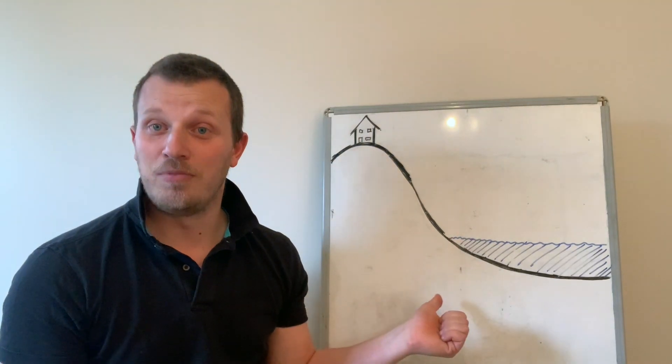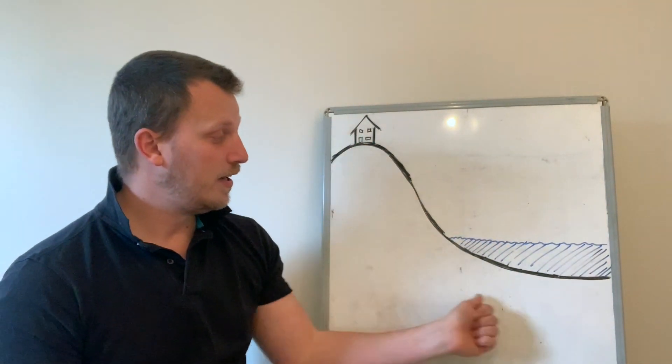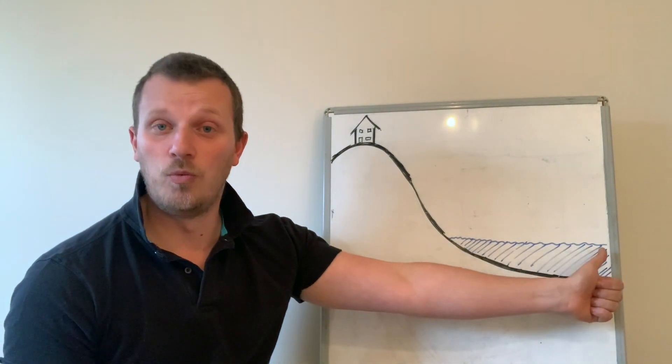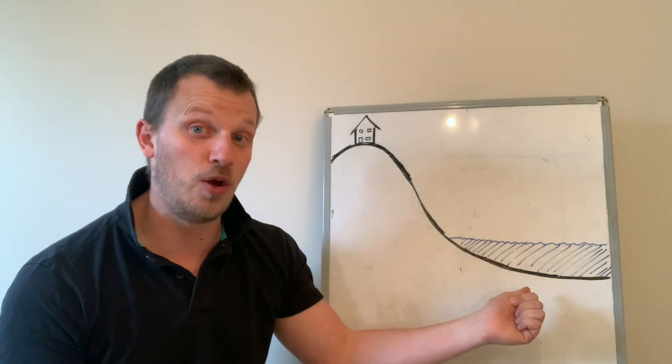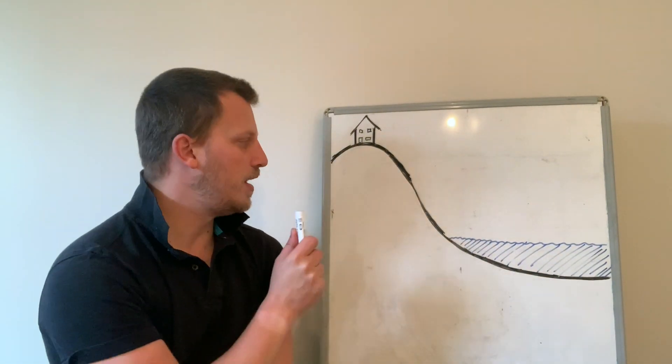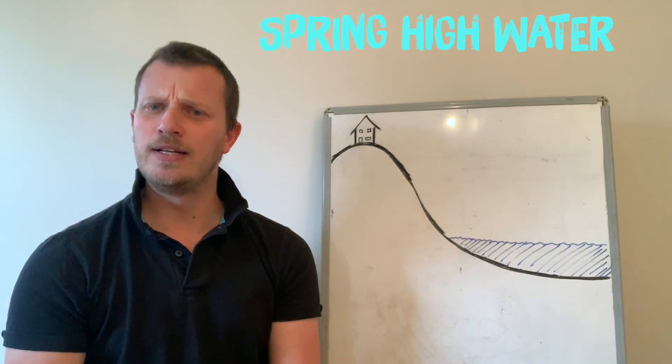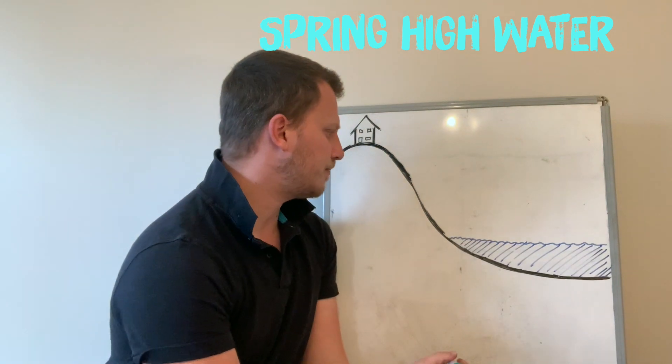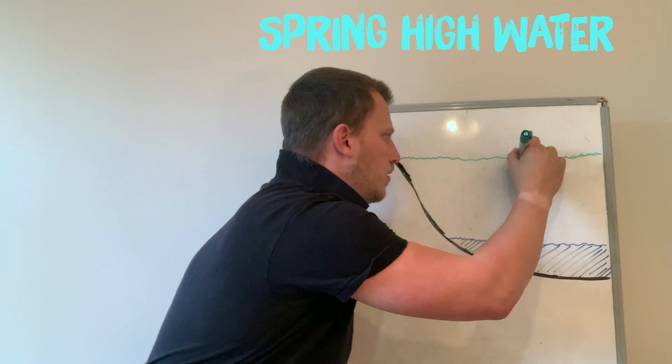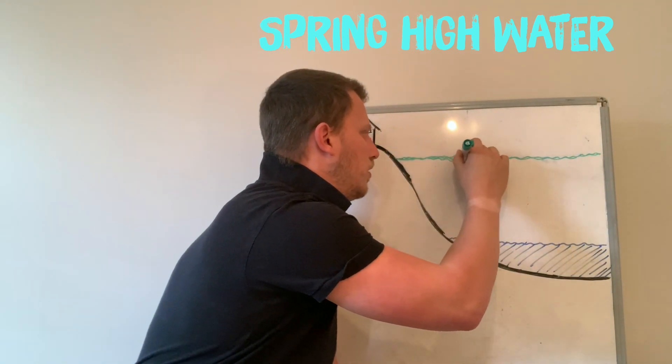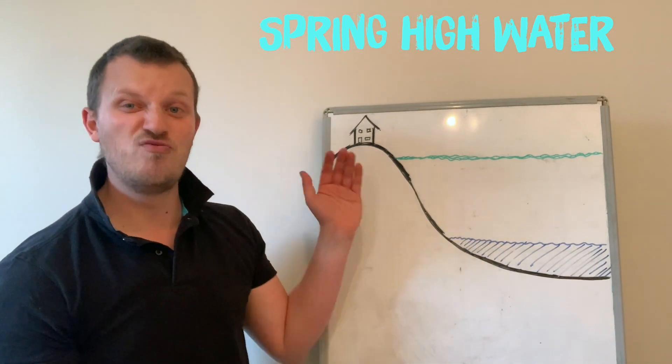Now I've got here, really simple, a whiteboard just to explain the basics. This here is the earth, this is the water, and this water represents the lowest that it could possibly ever go. Now I'm going to draw for you a spring high water. So remember spring, lots of water, and a spring high water will come in really high.